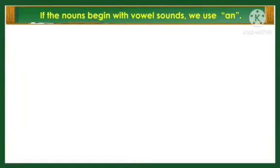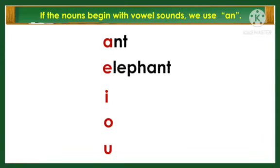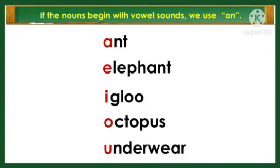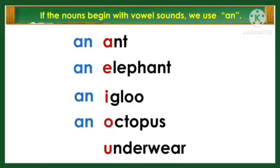If the noun begins with vowel sounds, we use 'an.' The vowels are A, E, I, O, U. Look at these words: ant, elephant, eagle, octopus, underwear. We use 'an' — an ant, an eagle, an octopus, an underwear.